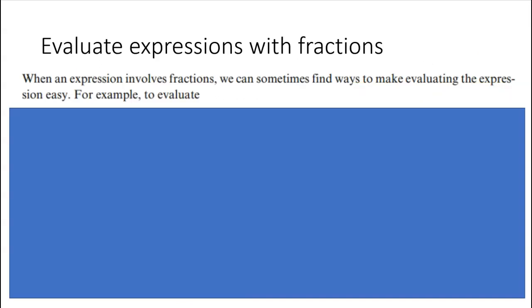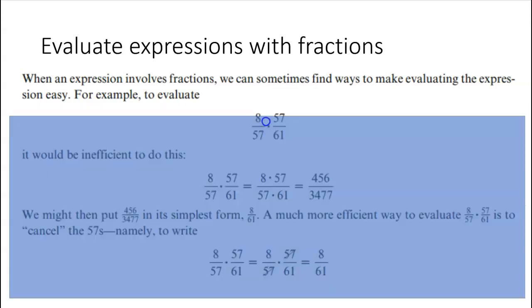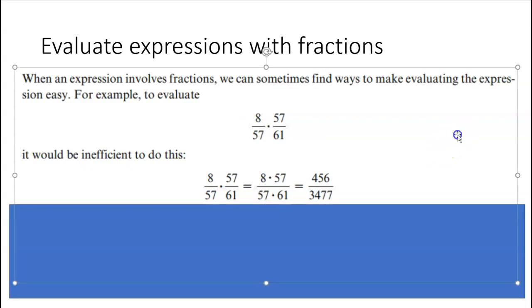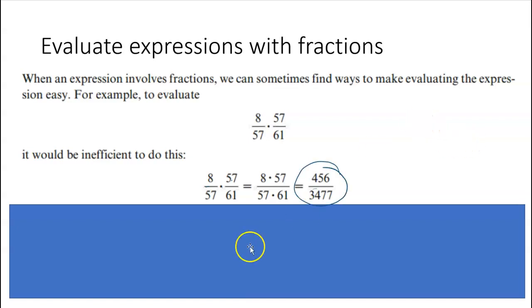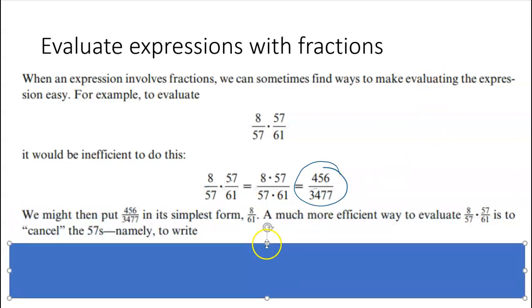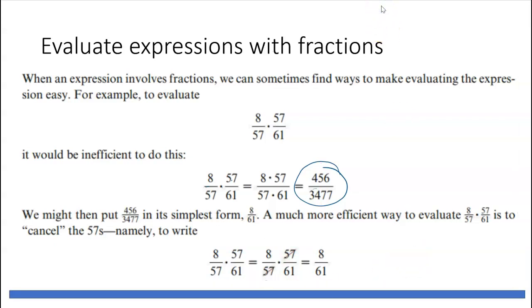So when an expression involves fractions, we're going to try to make it a little bit easier. All right? So if we've got this fraction here, 8 over 57 times 57 over 61, it doesn't make a lot of sense to just multiply, because then we have to take out our calculator, right? We would say, okay, 8 times 57, 57 times 61, and then we get this huge number. And then we've got to simplify it. So we like to simplify earlier.